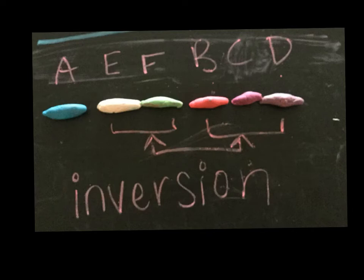So, our normal order was A, B, C, D, E, F. So, what happened here is B, C, and D switched with E and F.